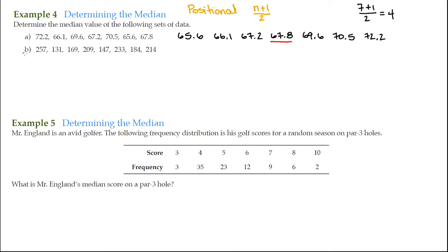We'll do the same for letter B here. We'll go ahead and we'll put this data in numerical order. So I have 131, 147, 169, 184, and I'm just going from the lowest, the smallest to the largest in numerical order.